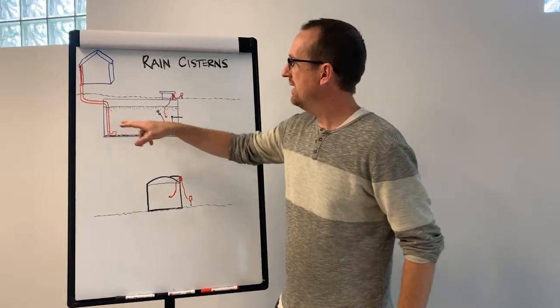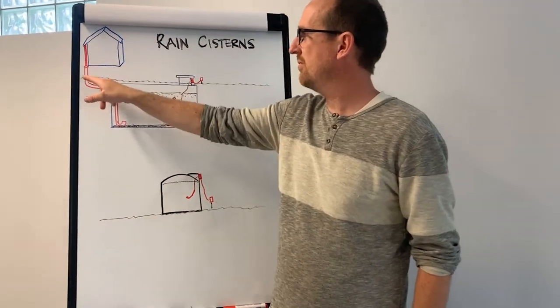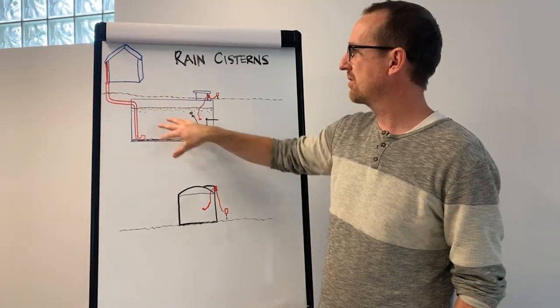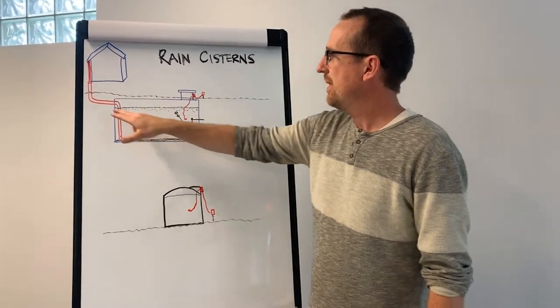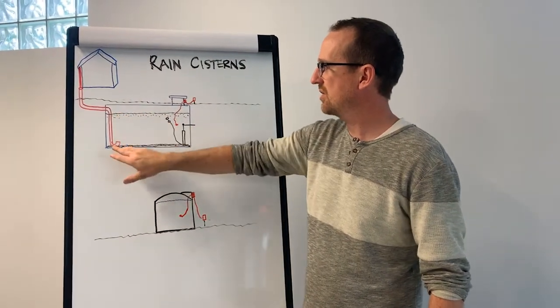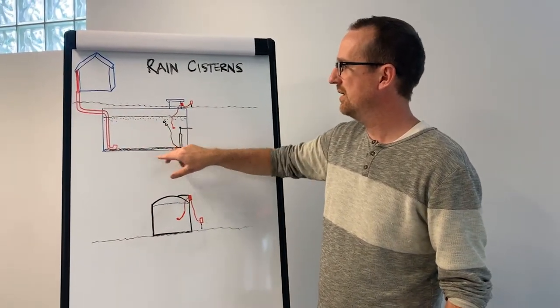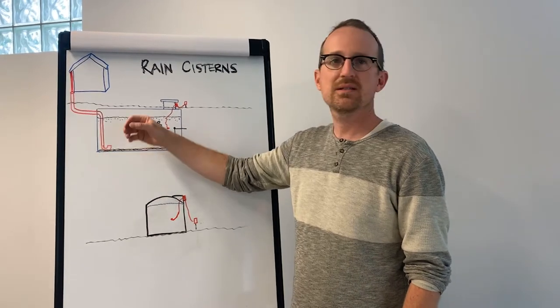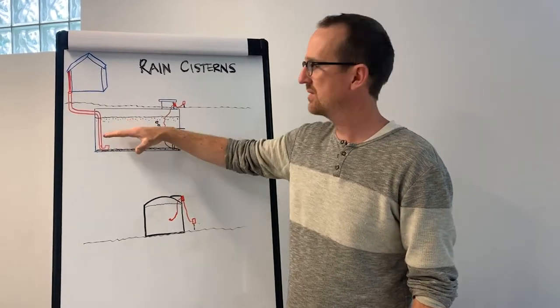In this diagram, I illustrated the downspout drain coming from the roof and feeding an underground cistern. In a cistern, we have two different zones. We have a zone at the bottom of the cistern where the sediment that's heavier than water settles.